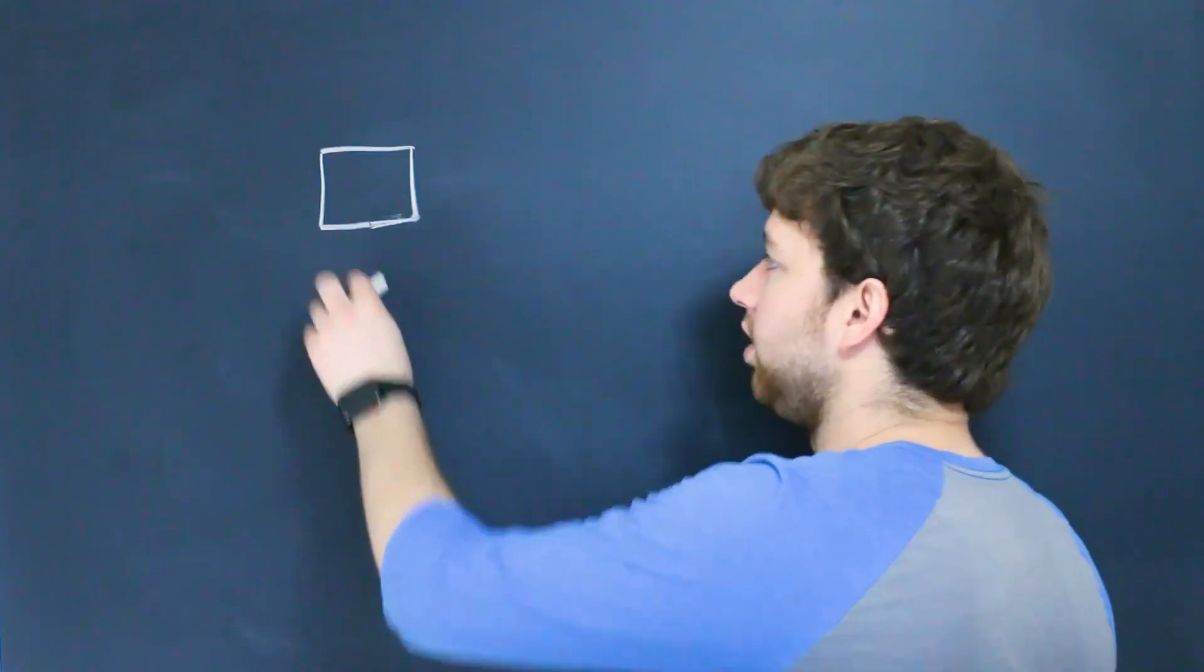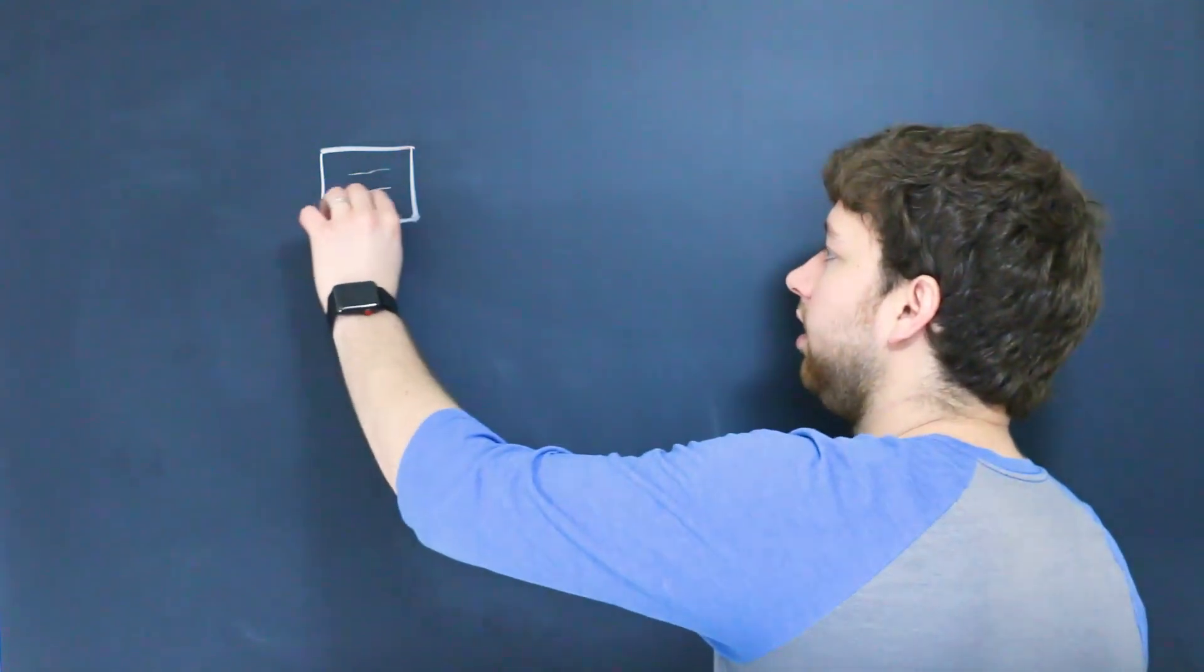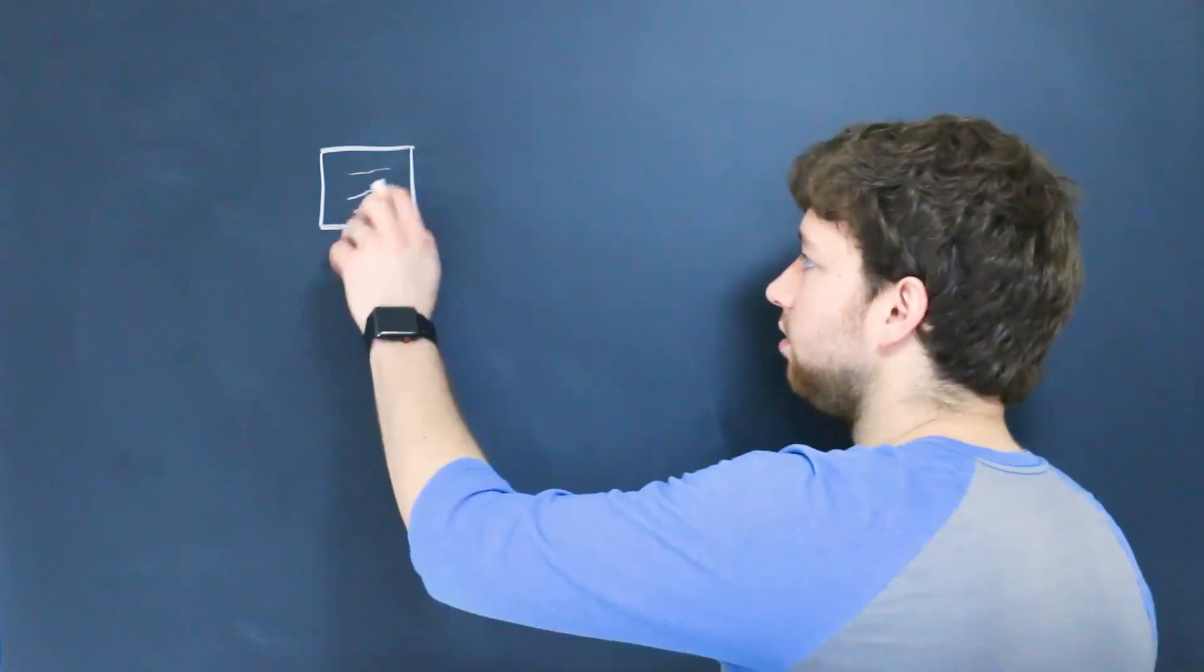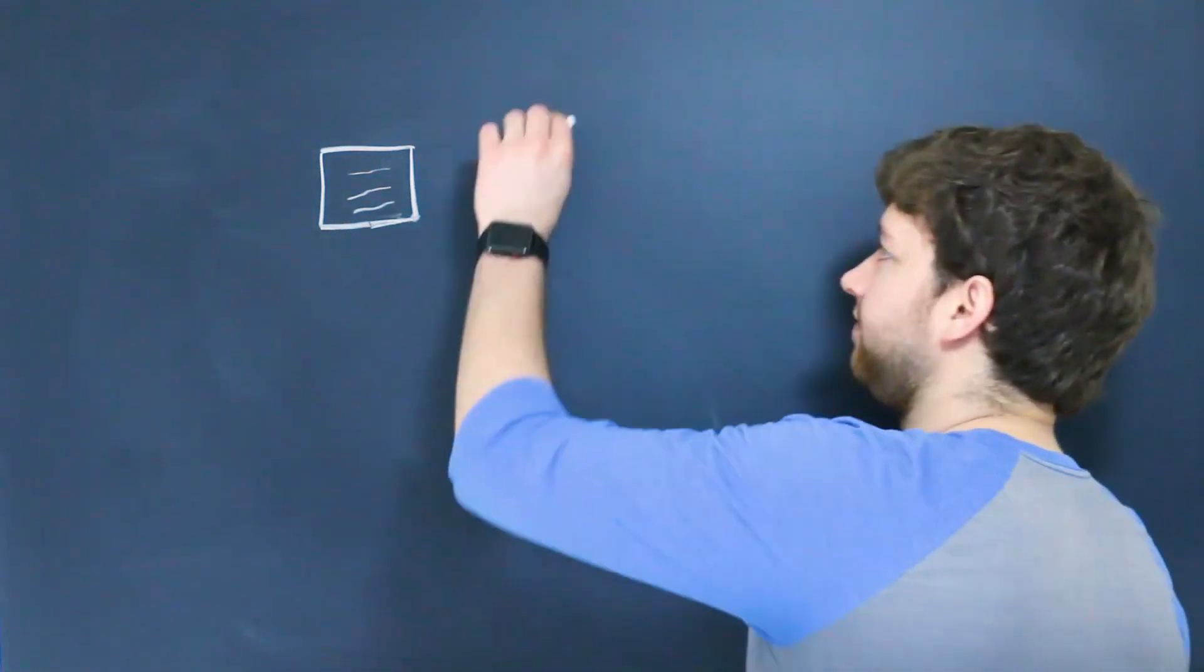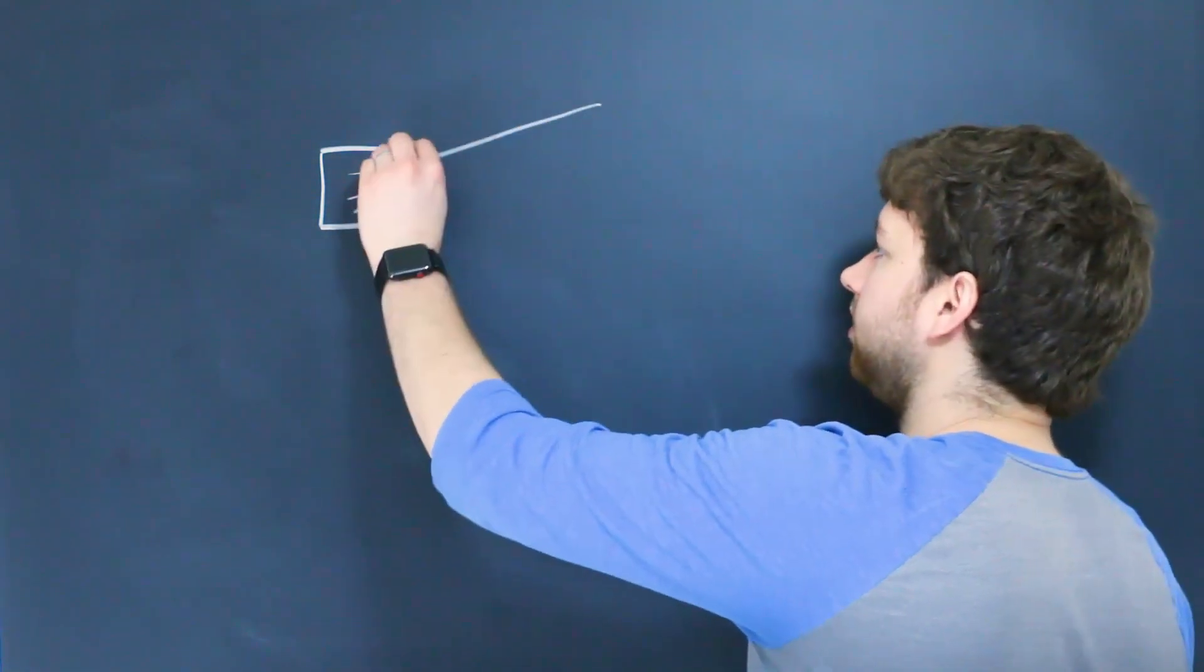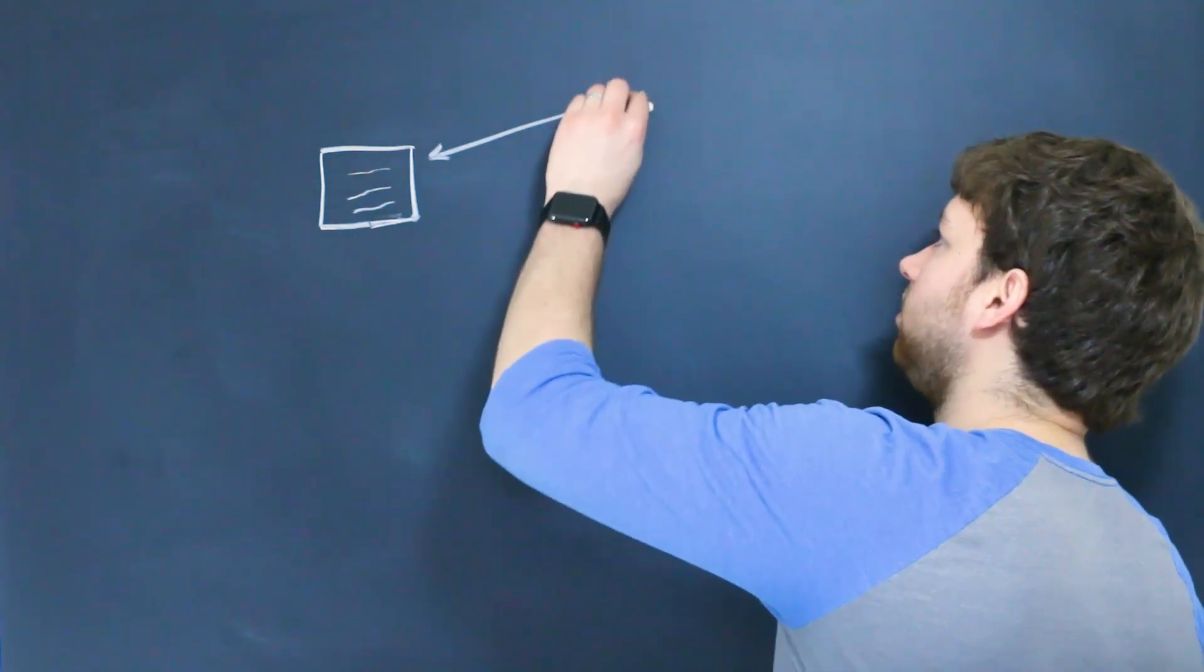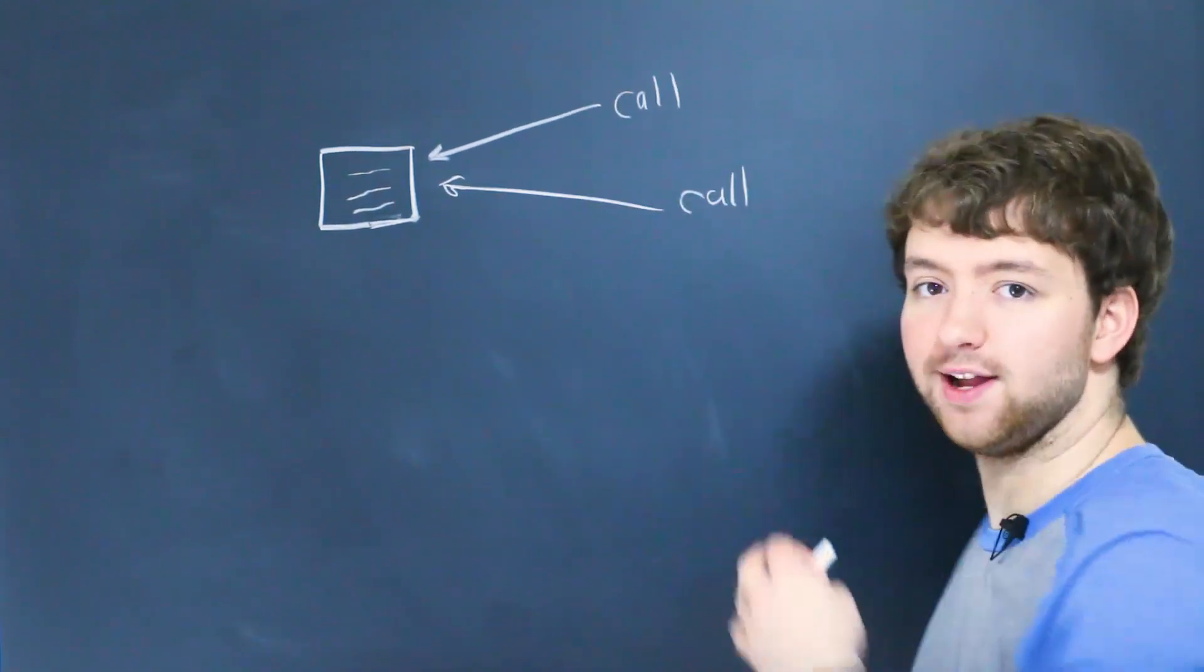This is your function, and you have some lines of code in here, and rather than using those lines of code over and over and over again, you can just call this function multiple times. So here we have one call, here we have another call, and so forth.